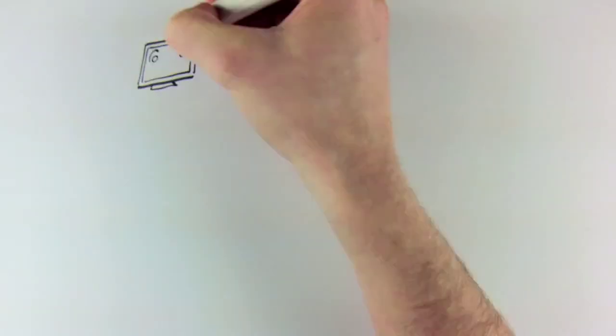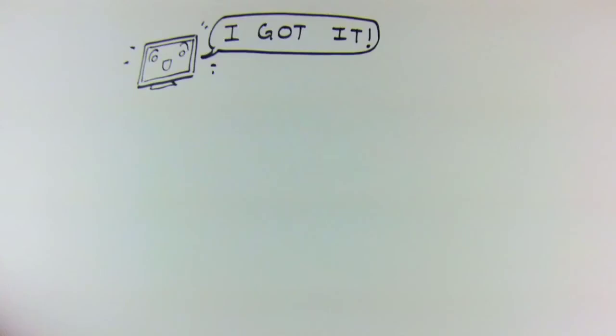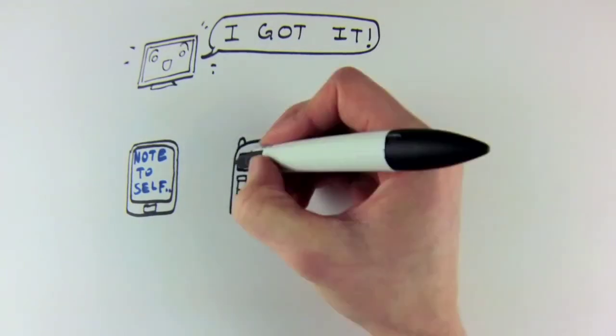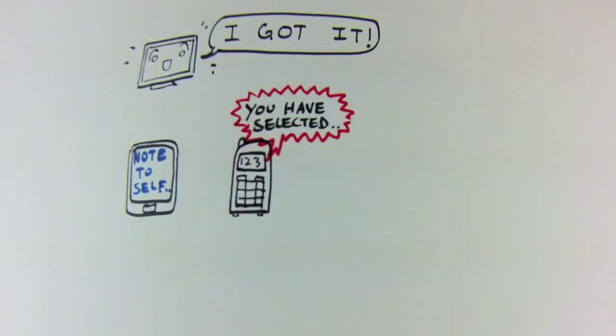Once the computer has decided which guesses to go with, it can finally take action. In the case of dictation software, it will print the guess to the screen. In the case of a customer service phone line, it will try to match the guess to one of its pre-set menu items.